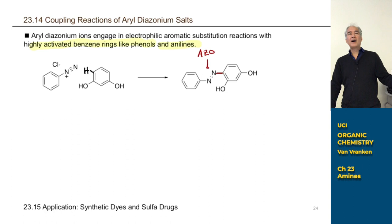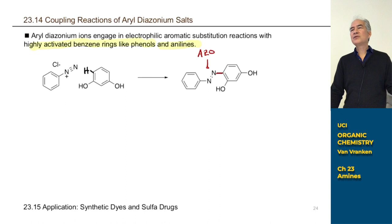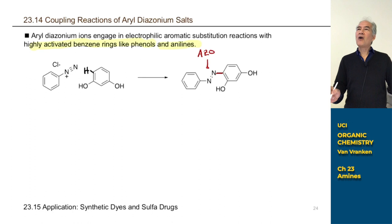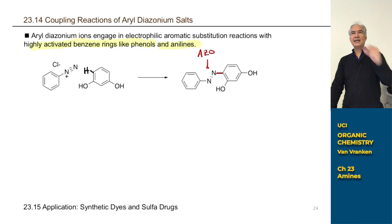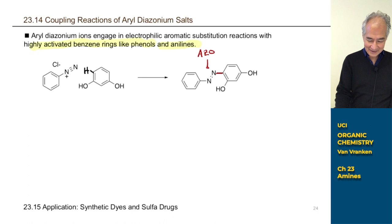Whenever you see this azo linkage — aromatic rings linked together — that's called an azo compound, and that's called an azo linkage. This tends to make colored compounds: red, yellow, orange. If any of you are drinking a Gatorade or soft drink that is red, or eating Doritos that are a mixture of red, orange, and yellow, they are all colored by compounds made through organic synthesis just like this. They're made in a factory by people who sat in a class like this and learned how to do electrophilic aromatic substitution using azo dyes.